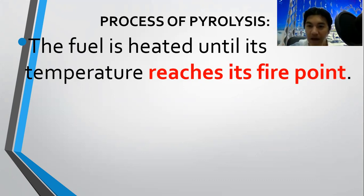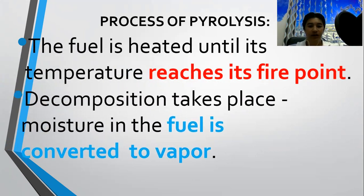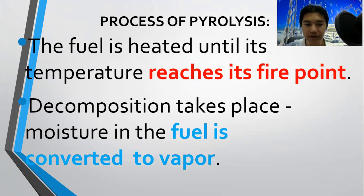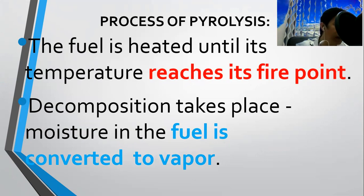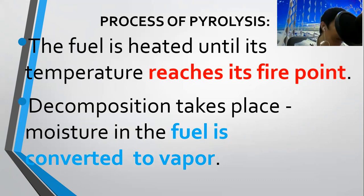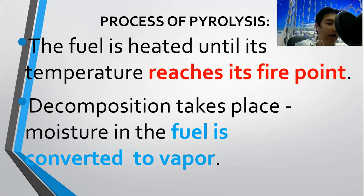When it already reaches the higher fire point, the decomposition takes place. The moisture in the fuel is converted to vapor. The decomposition produces combustible vapors that rise to the surface of the fuel. Free radicals undergo combustion — combustible vapors are technically termed as free radicals.